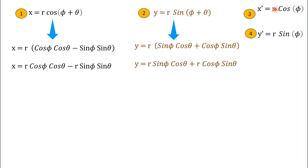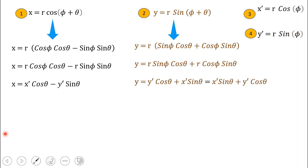From equation 3, R·cos(phi) = x-dash, and from equation 4, R·sin(phi) = y-dash. Substituting these into the expanded forms: x = x-dash·cos(theta) − y-dash·sin(theta), and y = x-dash·sin(theta) + y-dash·cos(theta).